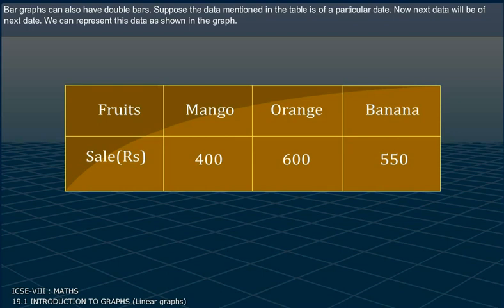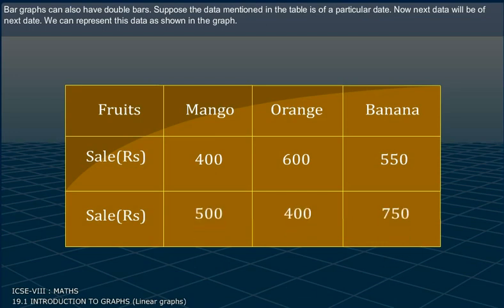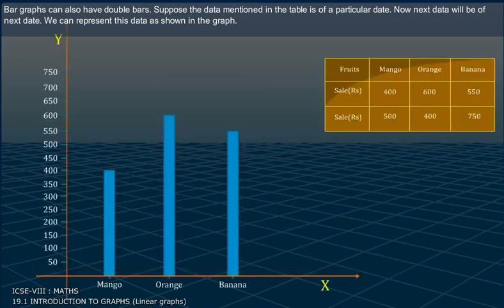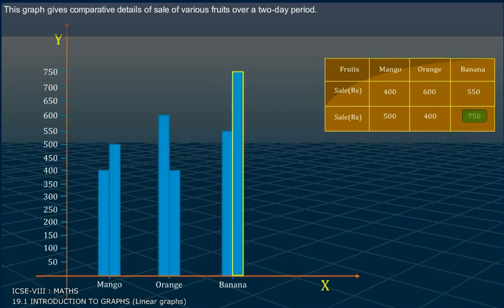Bar graphs can also have double bars. Suppose the data mentioned in the table is of a particular date. Now next data will be for the next date. We can represent this data as shown in the graph. This graph gives comparative details of sale of various fruits over a two-day period.